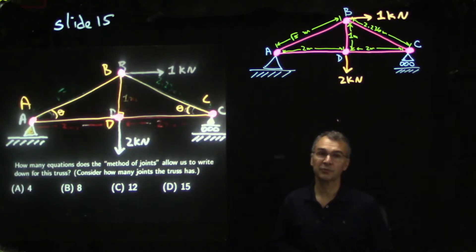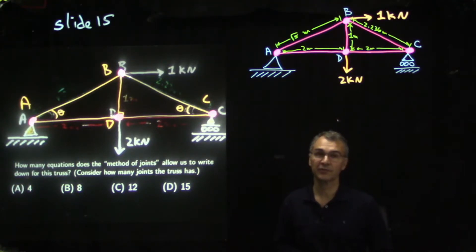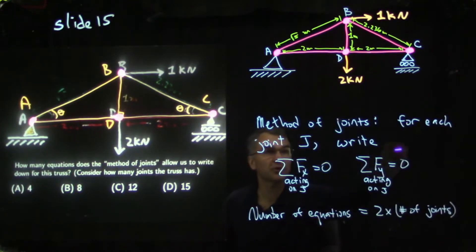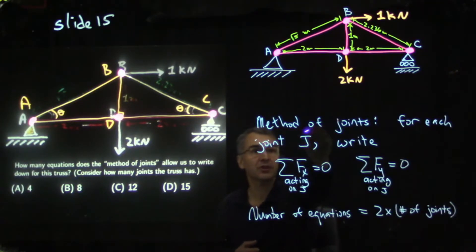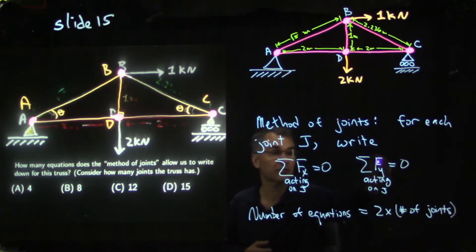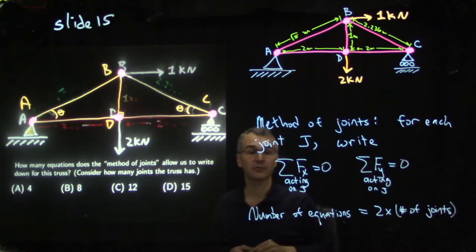Recall from the previous problem where we had several cables intersecting at a point: we were able to write two equilibrium equations — sum of forces in x equals zero and sum of forces in y equals zero — for that one point. The method of joints for a truss says: for each joint j, you can write the sum of forces in x equals zero and the sum of forces in y equals zero.